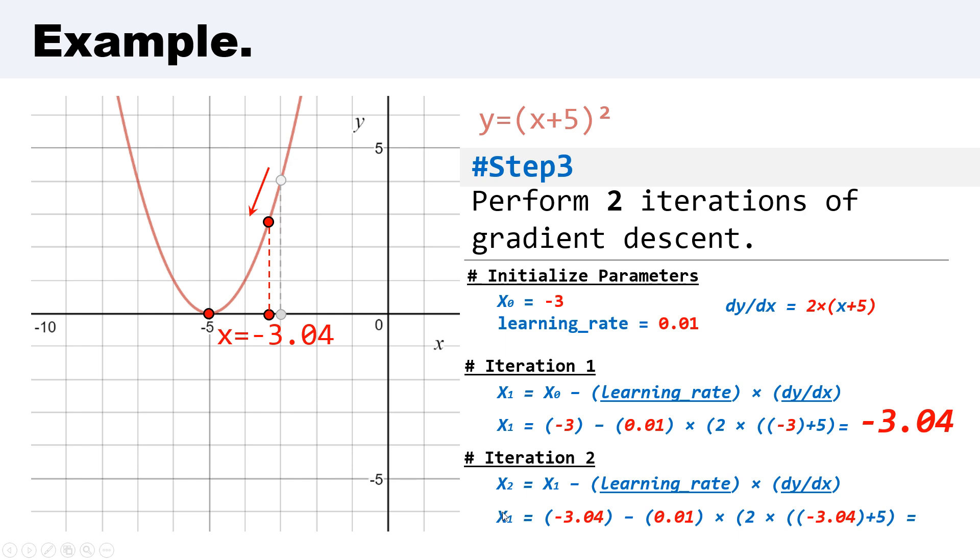We have x₁ equal to -3.04 from the first iteration.